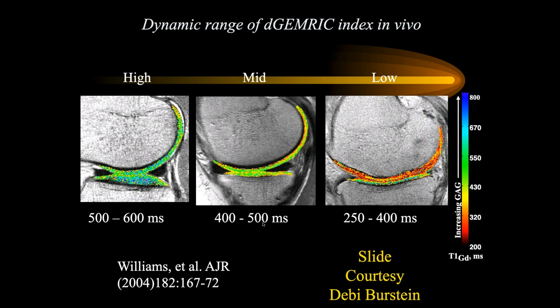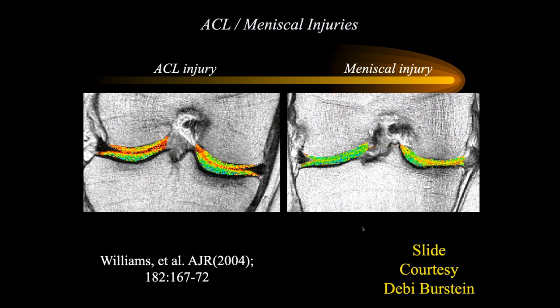These are T1-weighted images looking at contrast to decrease T1 time. If you have a lot of contrast, you have a short T1 time and therefore abnormal articular cartilage.